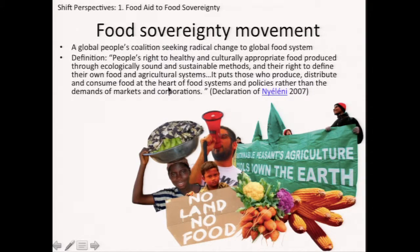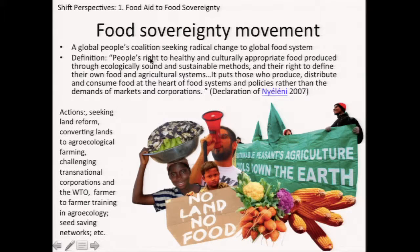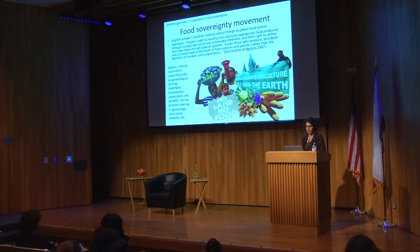The food sovereignty movement is a very broad worldwide movement of growers and peasants around the world. They've had many different kinds of actions: they've sought and accomplished land reform, converted lands from industrial to agroecological farming, challenged transnational corporations and the World Trade Organization, and set up programs of farmer-to-farmer training in agroecology, seed-saving networks, and other things. They're very effective.